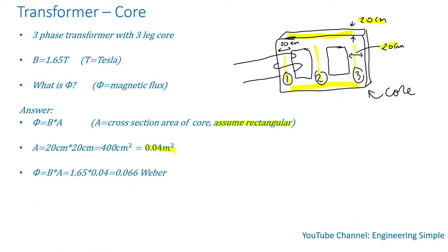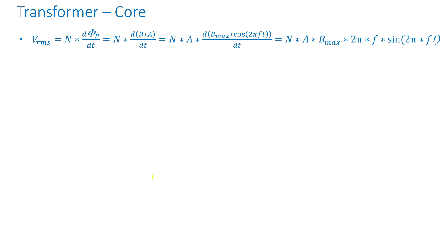You always want to pay attention to units and use universal units so that you are not off by factors. Going back to this formula and plugging in numbers, I get 0.066 Webers.